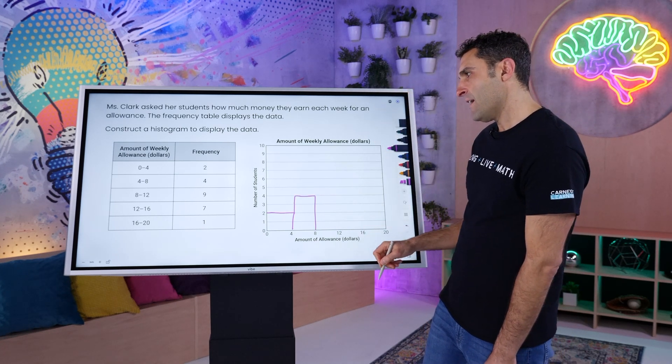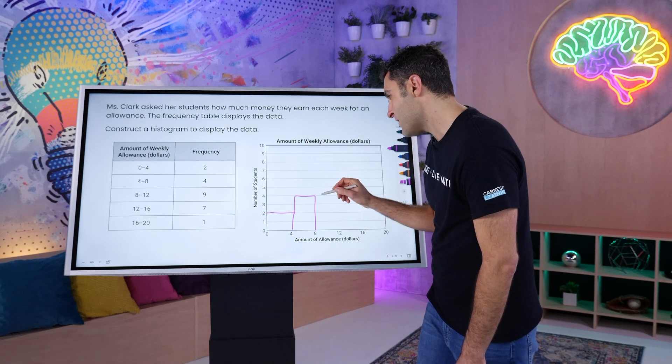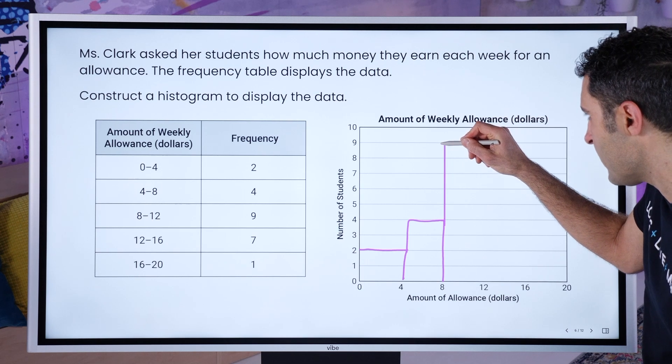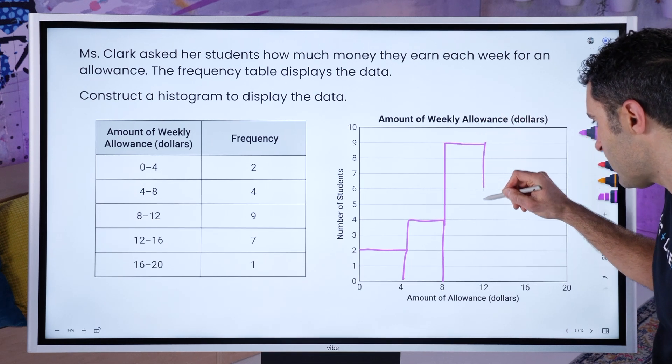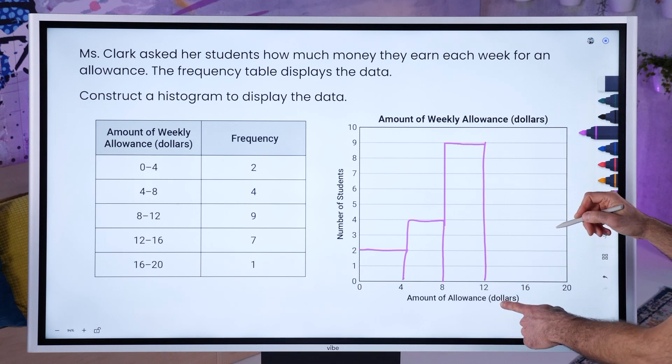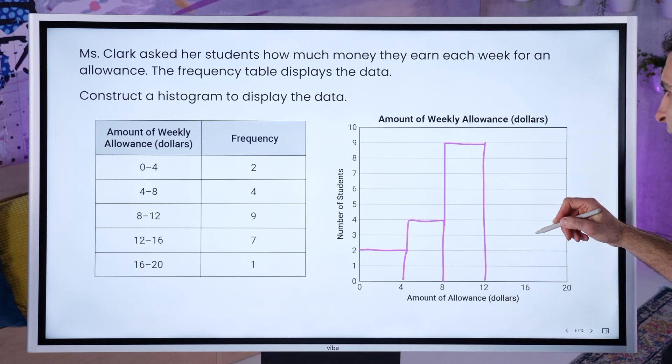There you go. And then 8 to 12 is 9. Alright, there you go. And then you have dropping to 7, $12 to $16 made by 7 students.